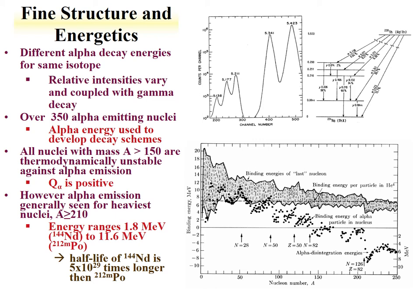This isn't completely true. There are energy ranges from about 2 MeV to almost 12 MeV, where neodymium-144 is a very low-energy alpha emitter in the lanthanides, and polonium-212 metastable is a very high-energy emitter. We also see a correlation between half-life and decay energy, where the neodymium half-life is almost 10 to the 30th times longer than polonium-212. Generally speaking, the shorter the half-life, the higher the alpha decay energy.